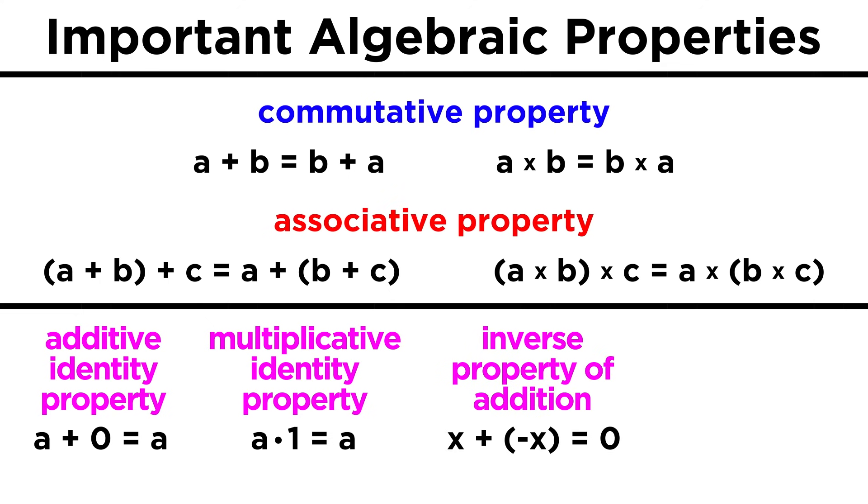And lastly, the inverse property of addition says that anything plus its additive inverse equals zero, so x plus negative x equals zero. And the inverse property of multiplication says that anything times its multiplicative inverse equals one, so x times one over x equals one. That's pretty much all we need to know in terms of number properties for algebra, so let's get to some equations.